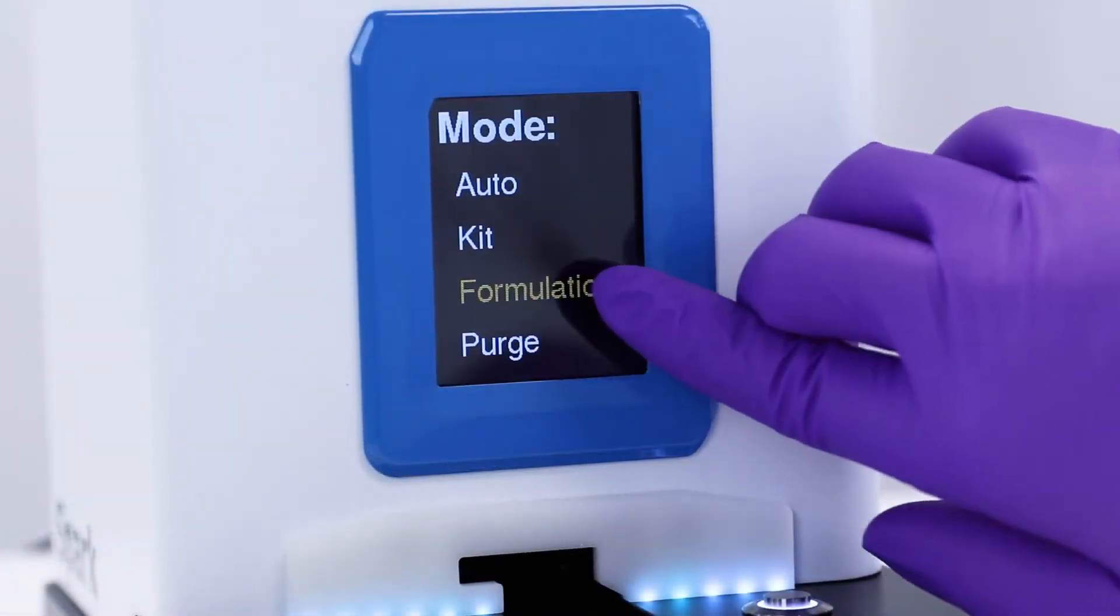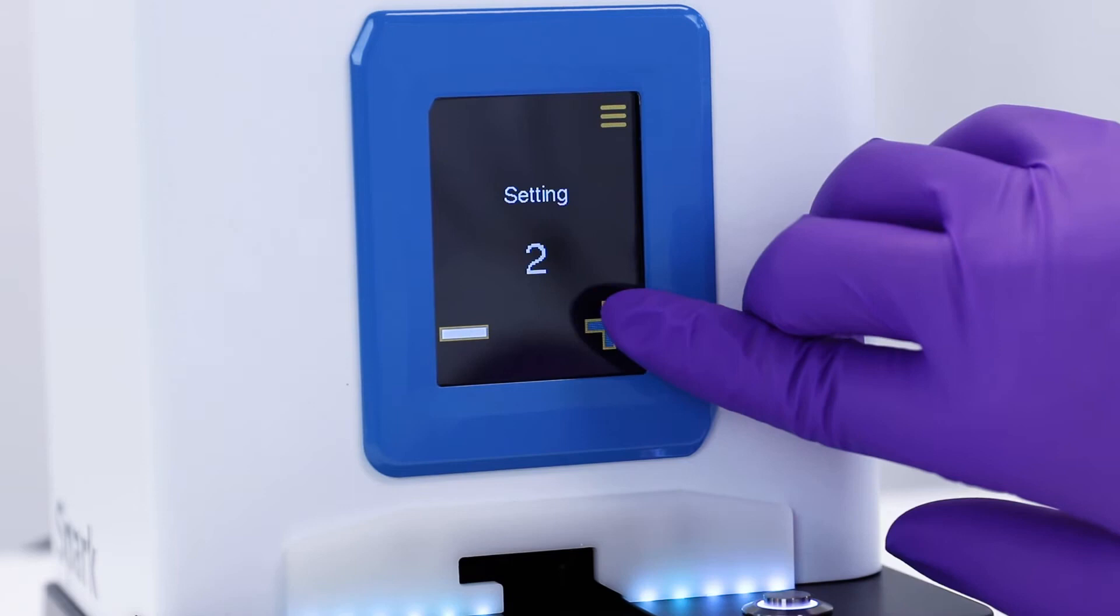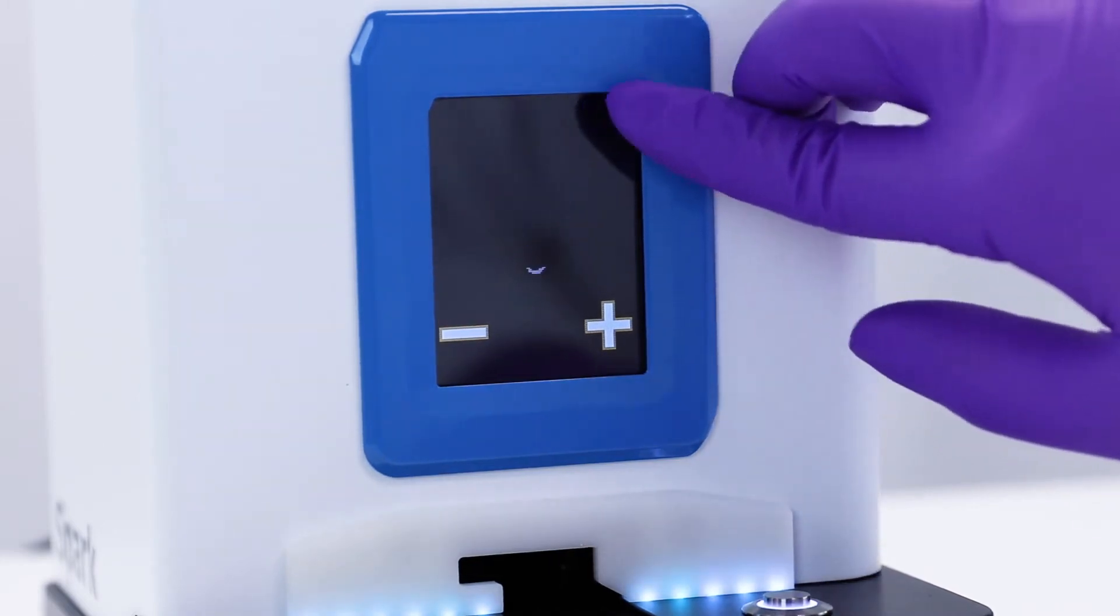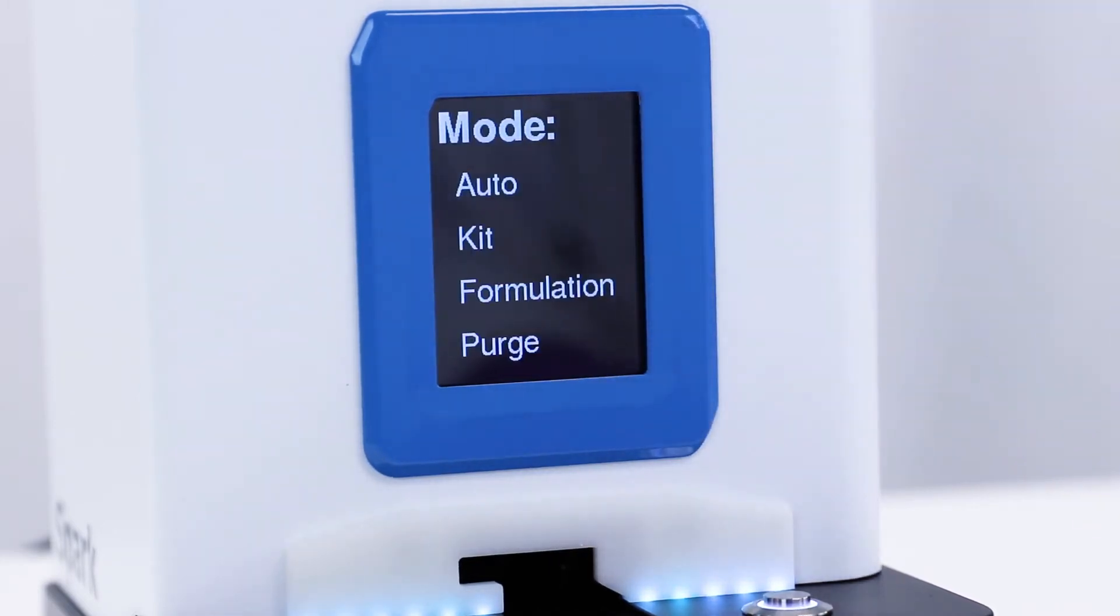Formulation Mode allows users the flexibility to select settings suitable for formulations of different volumes and to optimize settings for their materials. Some Spark kits use Formulation Mode, so check your Spark Kit User Guide for details.